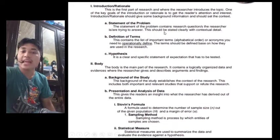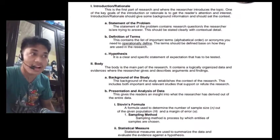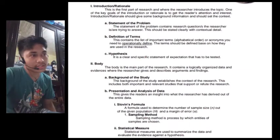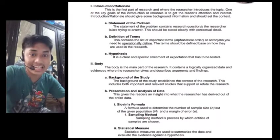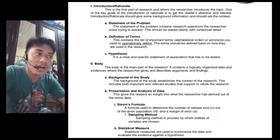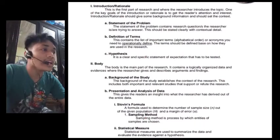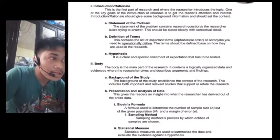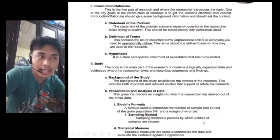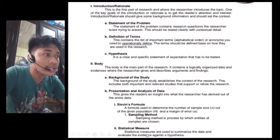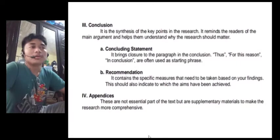Next, presentation and analysis of data. This gives the reader an insight into what the researcher has derived out of the entire data. In Slovins formula, a formula used to determine the number of sample size or the N out of the given population that indicates capital N and a margin of error, E. Number one, sampling method. Sampling method is a process by which entities of samples are chosen. Number two, statistical measures are used to summarize the data and evaluate the evidence against the hypothesis.